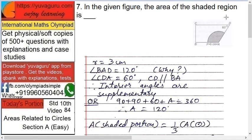In the given figure, the area of the shaded region is required. R equals 3 centimeters, so angle BAD equals 120 degrees and angle CDA equals 60 degrees.